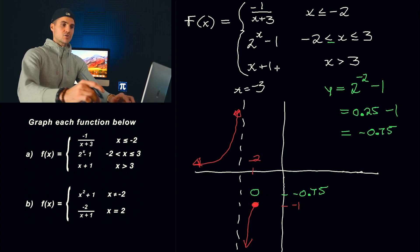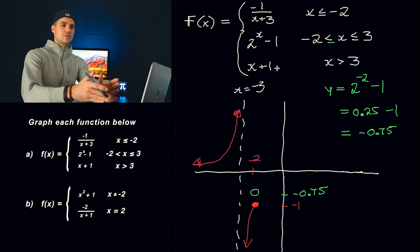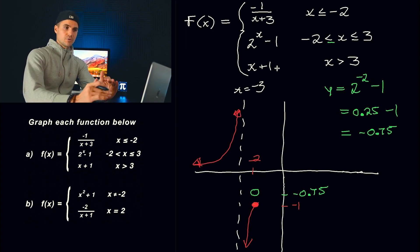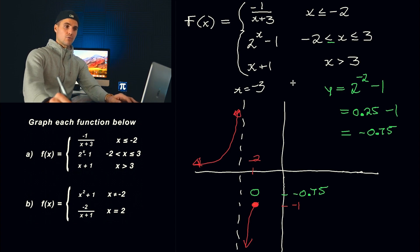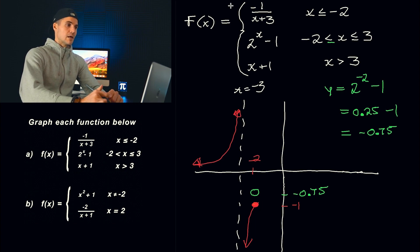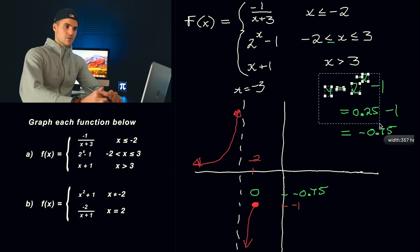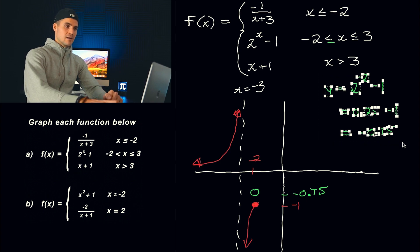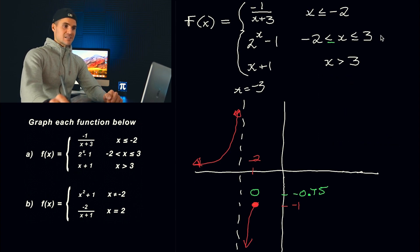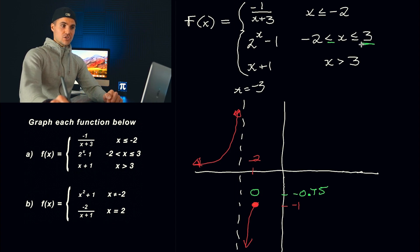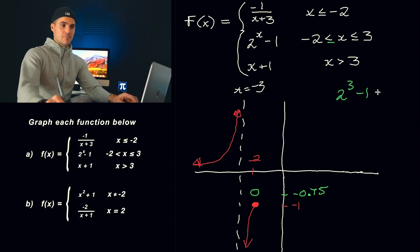That's going to be the starting of this exponential function. You can make a table of values — put in negative two, negative one, zero, one, two, all the way up to three where this domain ends — and make a table of values for two to the power of x minus one. I'm actually just going to plug in that last x value of the domain where it finishes at x equals three. Two to the power of three minus one is eight minus one, which is seven.